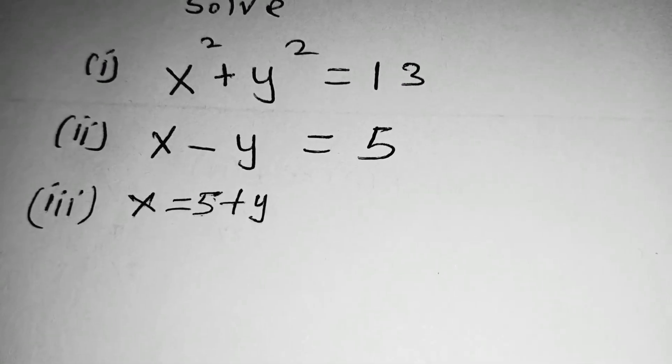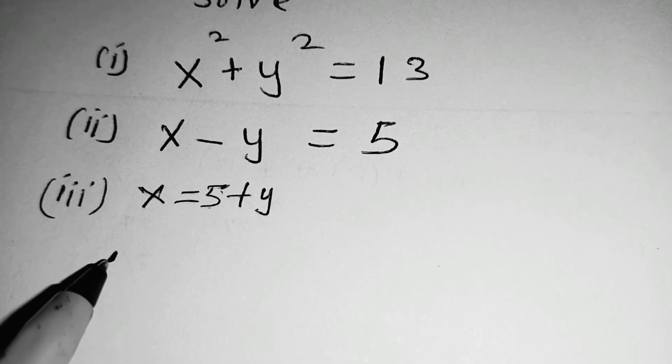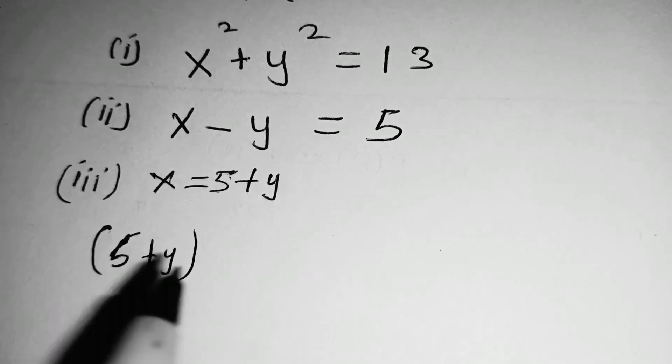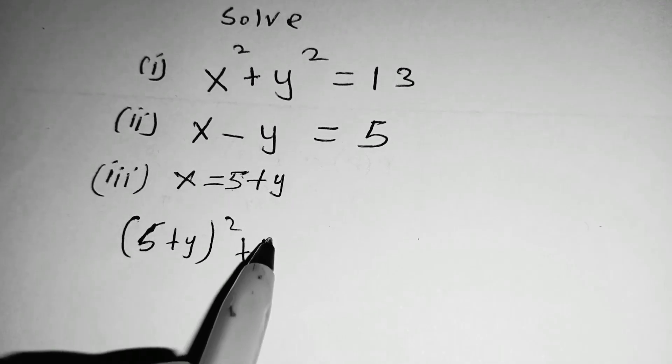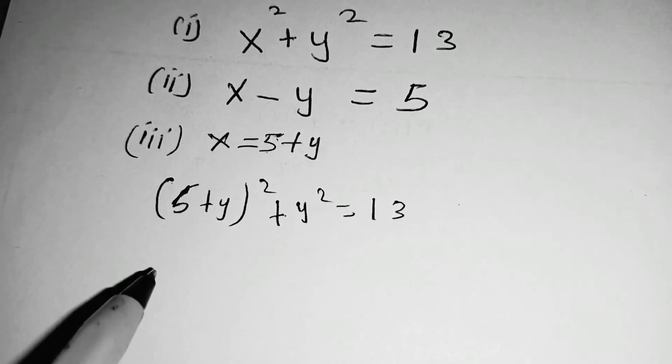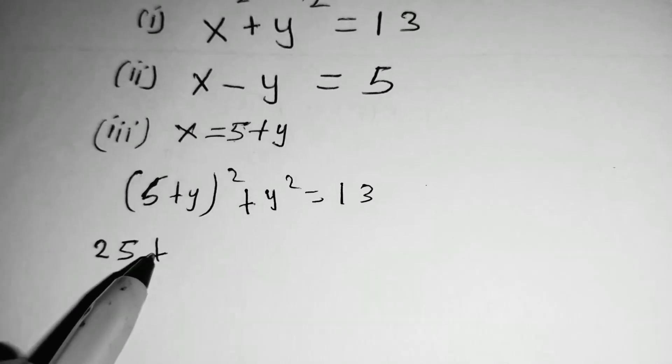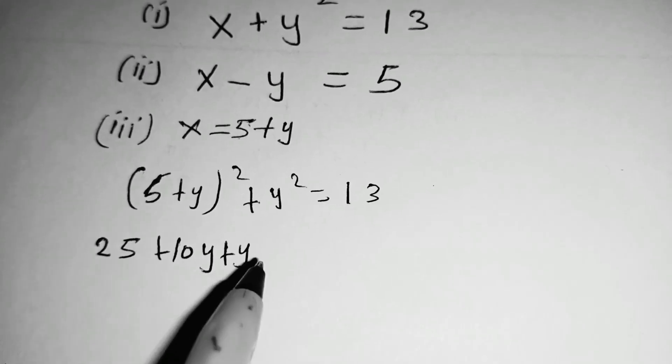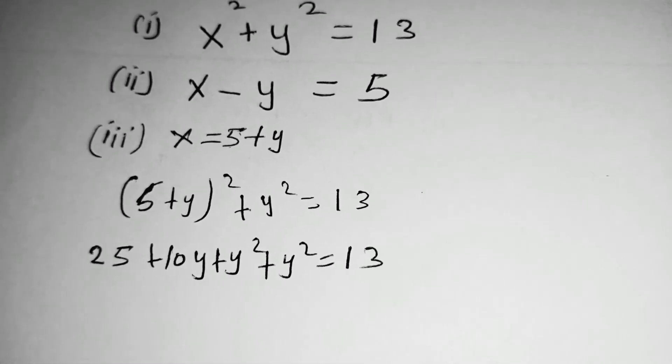Next, we substitute equation 3 in equation 1, so instead of x, we write 5 plus y, we square that, plus y squared, this is equal to 13. When you square this one, you will have 25 plus 10y plus y squared, plus y squared is equal to 13.